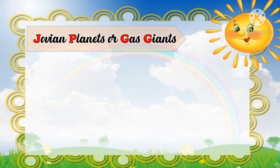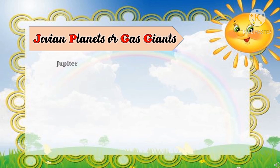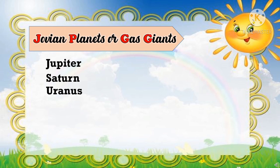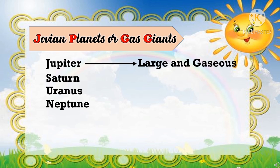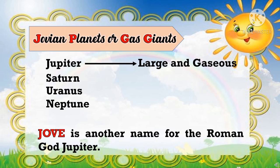The second group of planets is called Jovian planets or gas giants. These are Jupiter, Saturn, Uranus, and Neptune. They are called Jovian because, like Jupiter, these planets are large and gaseous. Jove is another name for the Roman god Jupiter.